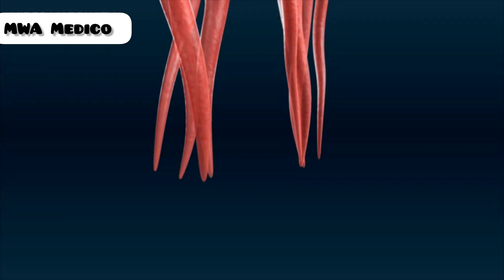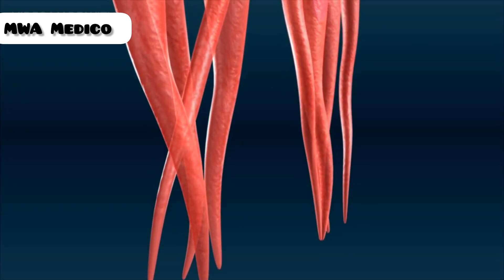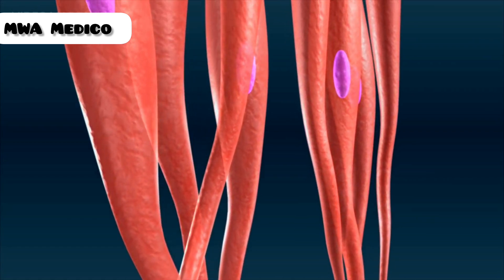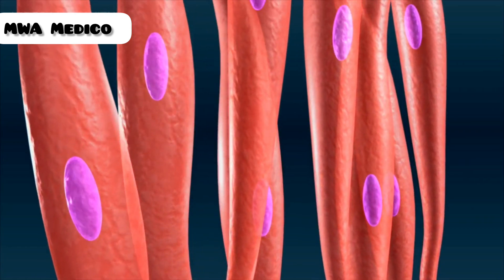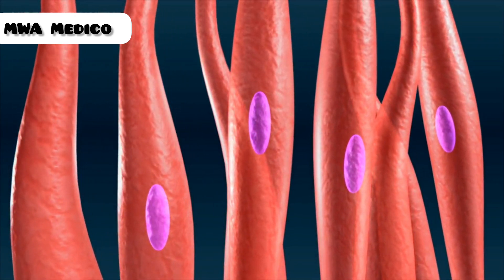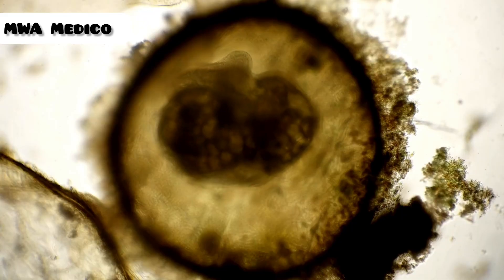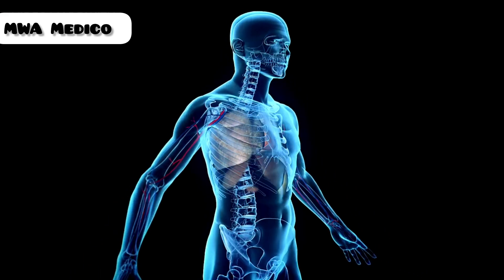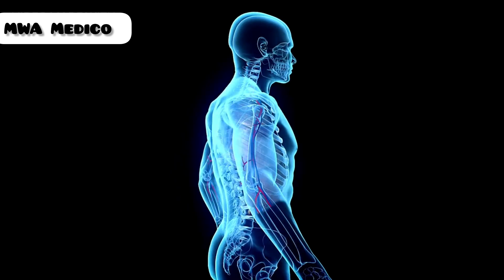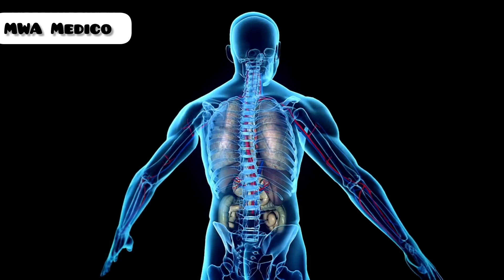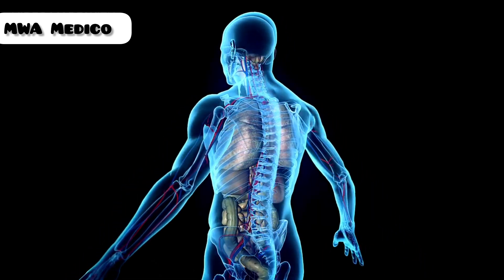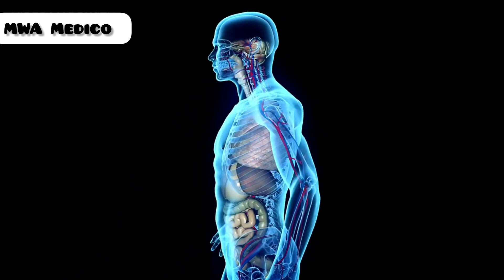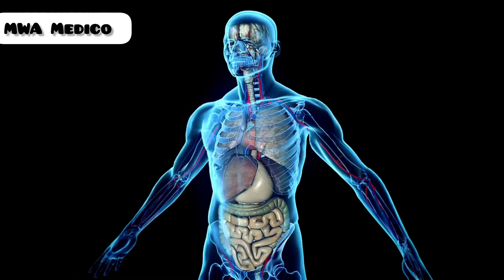The mesoderm will form muscles, bones, blood, heart, kidneys, and more. The endoderm will form the lining of the digestive and respiratory tracts, liver, pancreas, and more.